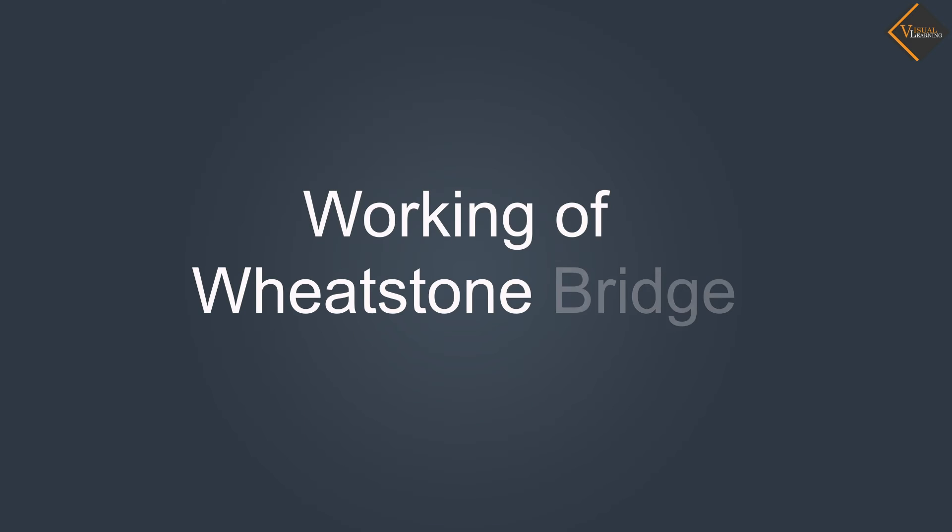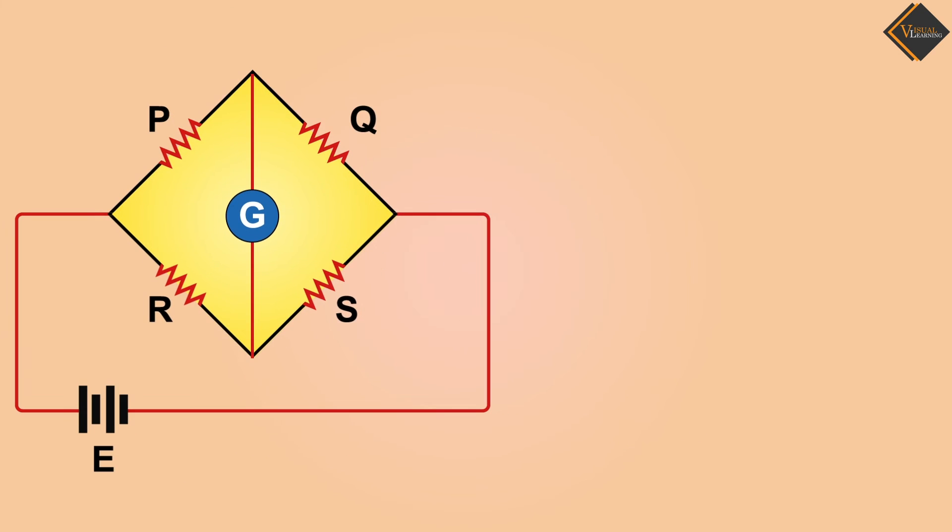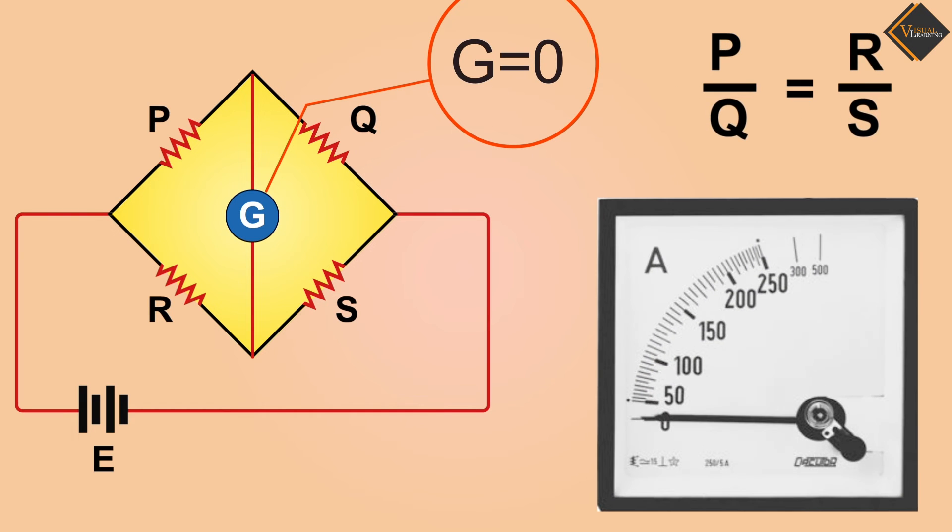Now, let's understand the working of Wheatstone Bridge. The Wheatstone Bridge operates on the principle of null deflection. This means that the ratio of parallel resistances in the bridge will be equal and the current value in the galvanometer connected to the circuit will be zero, which is called null deflection.